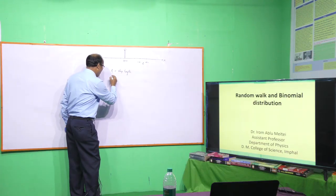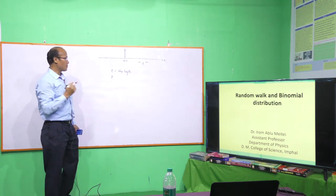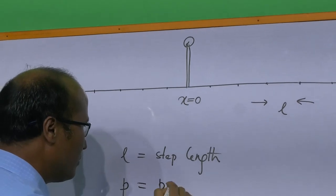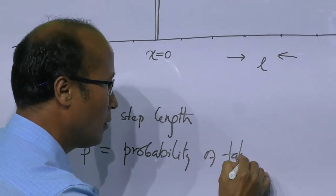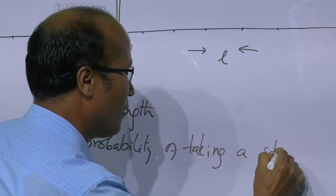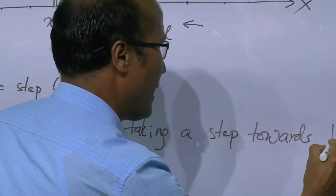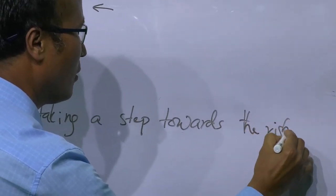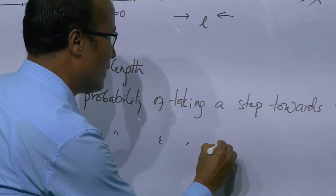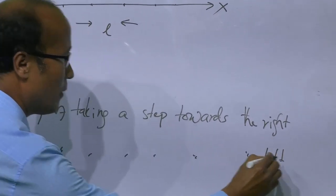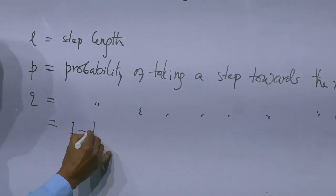We assign a probability P for taking a step towards the right, and phi is equal to the probability of taking a step towards the left. Q is equal to 1 minus P.